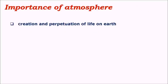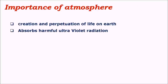The next important feature is the absorption of harmful ultraviolet radiation by the atmosphere. We know that there is a layer called ozone, or O3, in the stratosphere. This ozone layer is very important because it absorbs harmful ultraviolet radiation emitted by the sun.